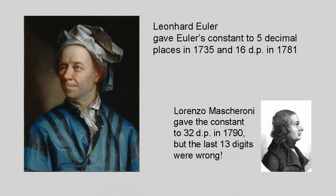The value of Euler's constant to five decimal places was first published by Euler in 1735. In 1781, he extended his approximation to 16 digits, and nine years after that, the Italian mathematician Lorenzo Mascheroni gave it to 32 digits, which is why the number is also called the Euler-Mascheroni constant. Whether the Italian fully deserves this recognition, however, is debatable since he got the last 13 digits wrong.